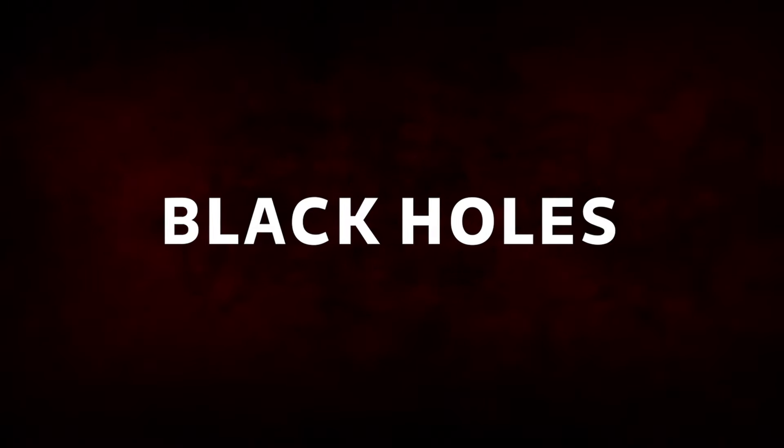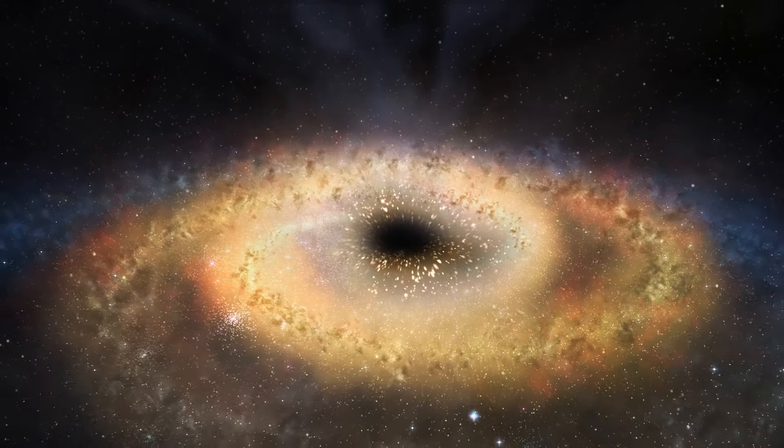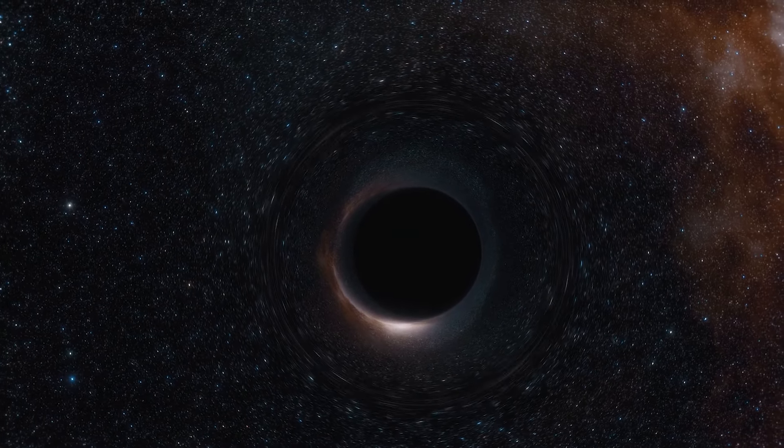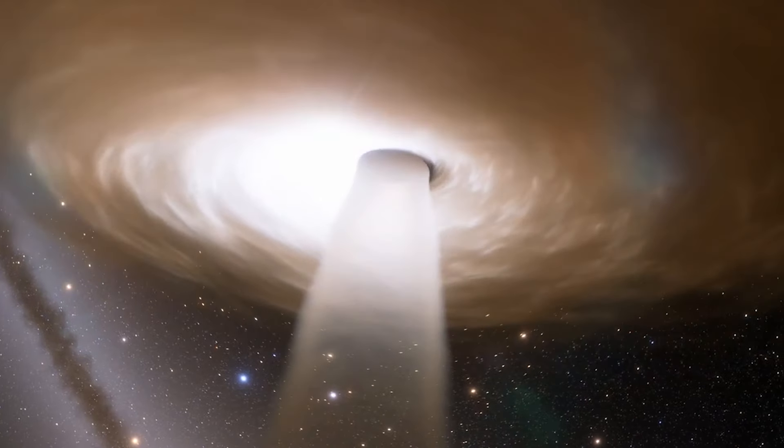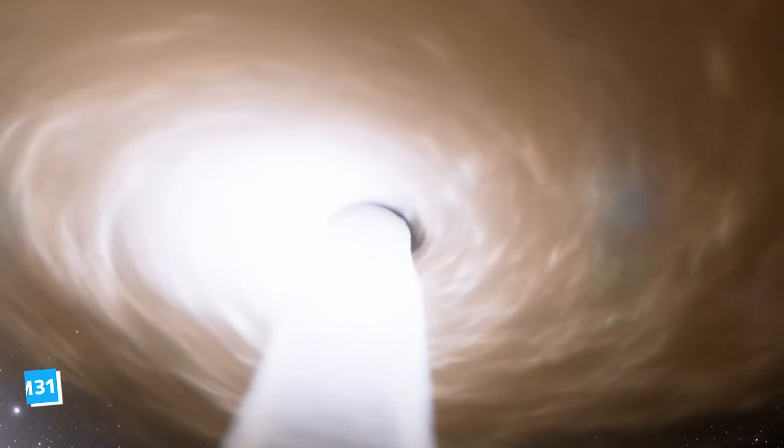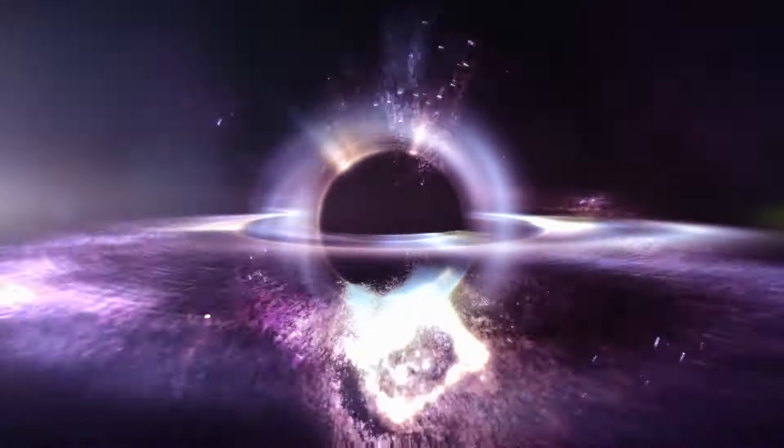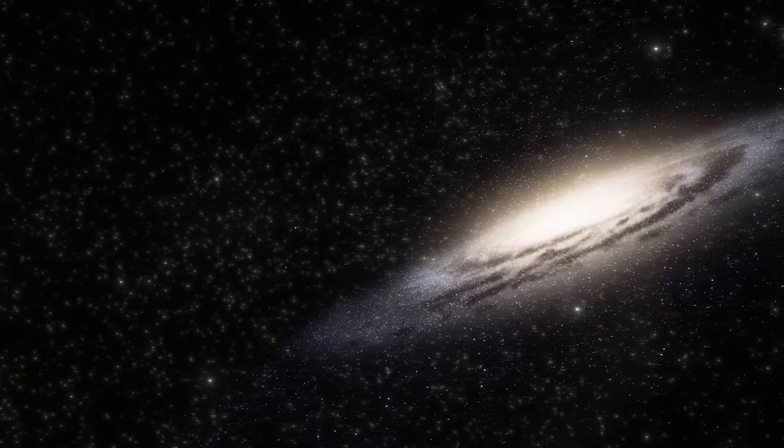Black holes. This galaxy is known to harbor supermassive black holes at its center. These black holes have masses millions to billions of times that of our sun. The supermassive black hole in Andromeda, known as M31, exerts a gravitational influence on the surrounding stars and gas, affecting the galaxy's structure and evolution.